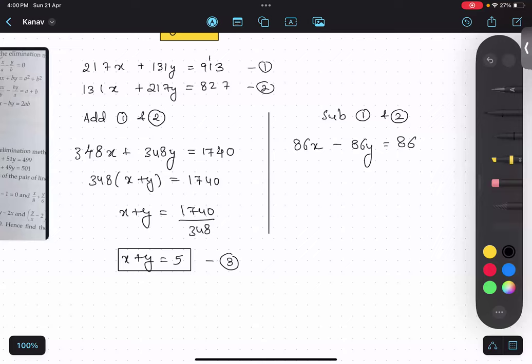913 minus 827 will give me again 86. Can you see how beautifully they designed this question, that everything is 86. So I will take 86 common. x minus y equals to 86. If I divide both sides by 86, x minus y equals to 1.